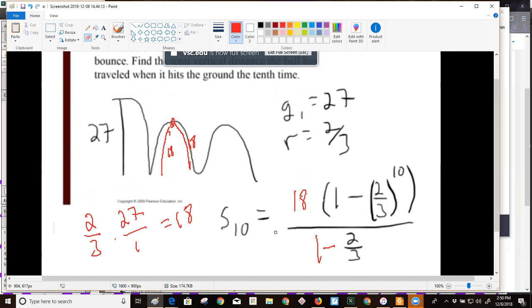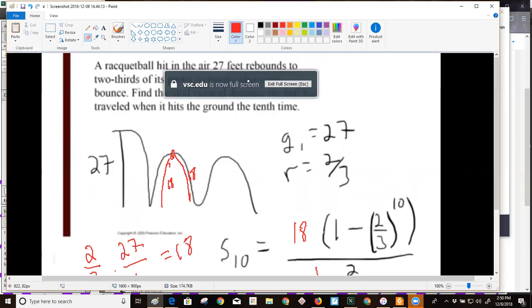So the sum of the first 10 bounces, S sub 10, is about 53, a little better than 53 feet.